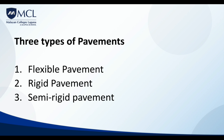There are three types of pavements. Flexible pavement is made of bituminous or asphalt material. Rigid pavement is made of concrete material. And semi-rigid pavement is the combination of flexible and rigid pavement.